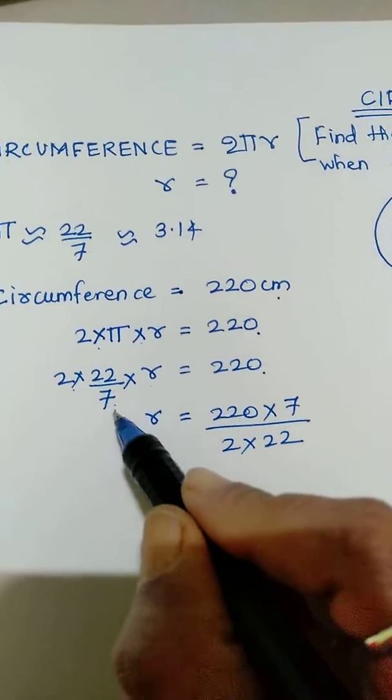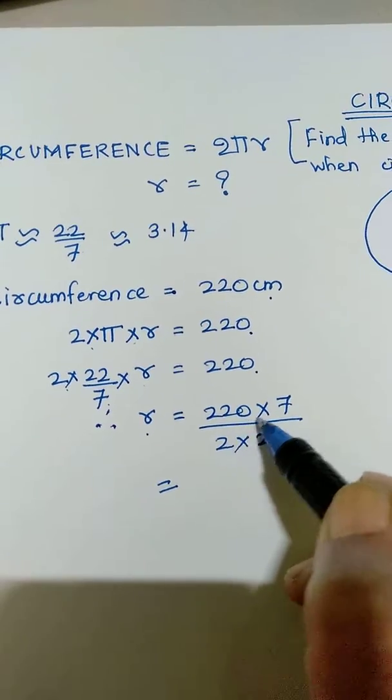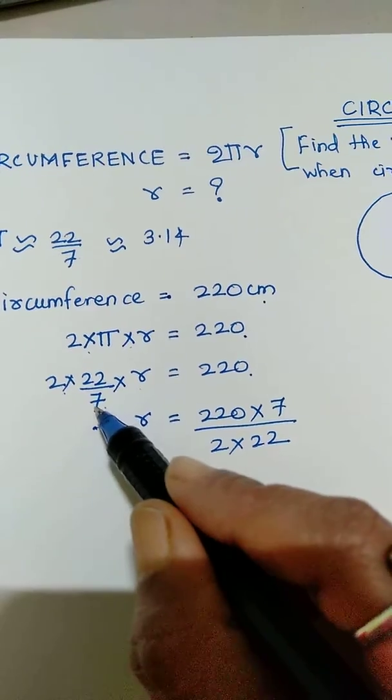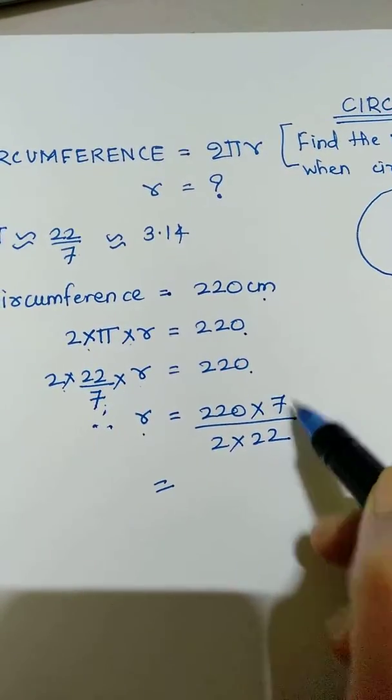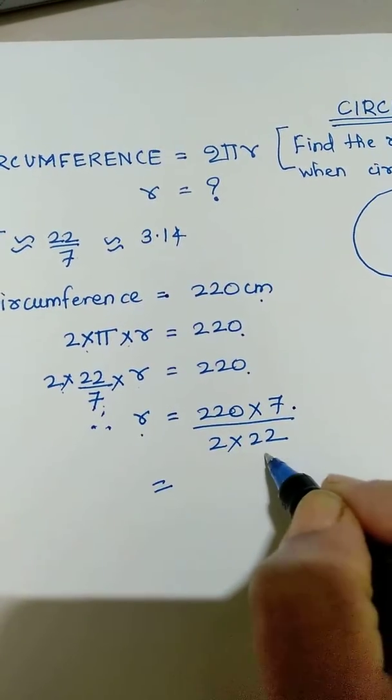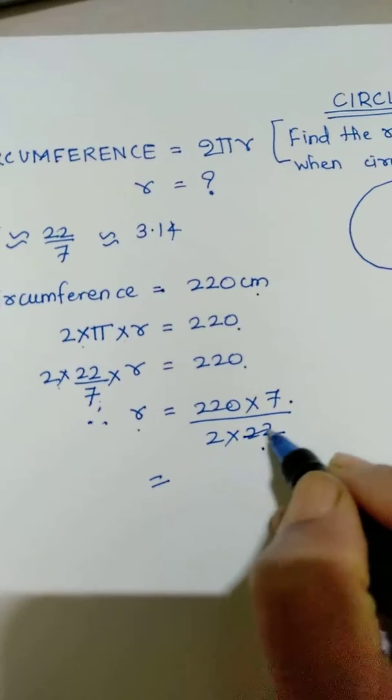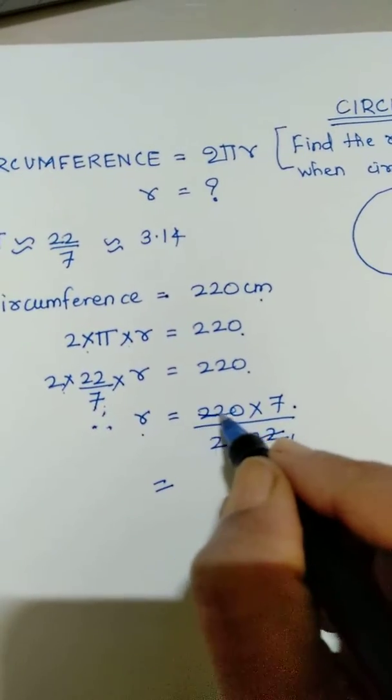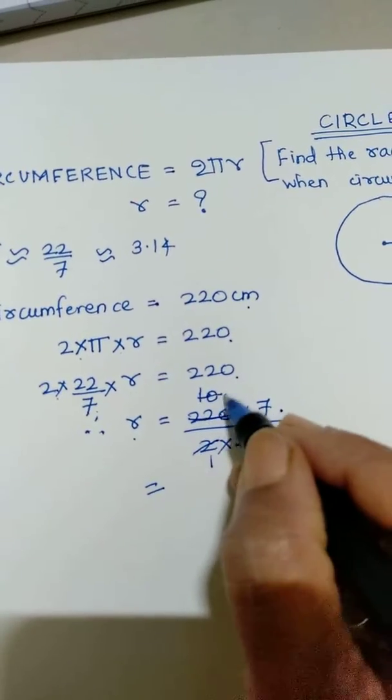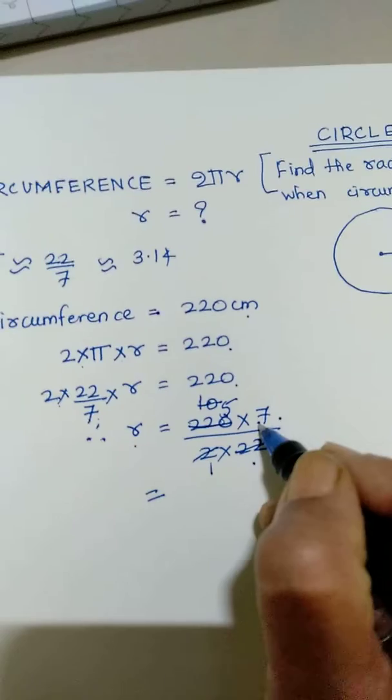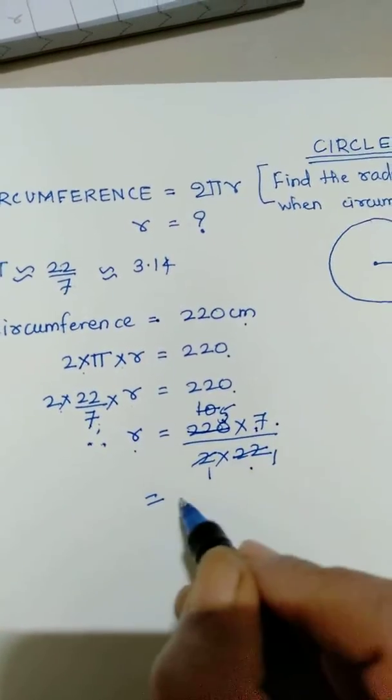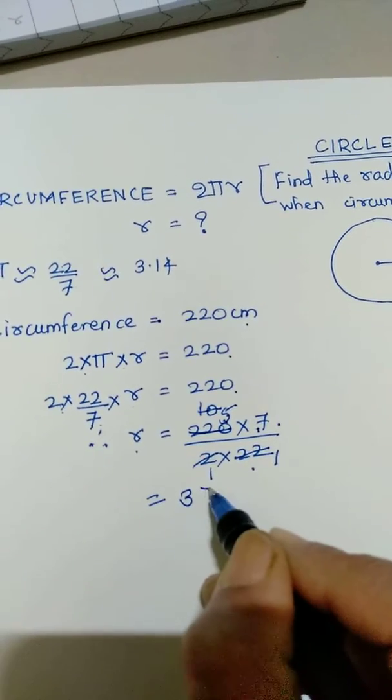So we keep r on the left hand side. r is equal to 220. With the rules of algebra we take 7 which is in the denominator here to the numerator, and 2 into 22 which is in the numerator here we take to the denominator. So let us work out: 220 divided by 22 is 10, then 10 divided by 2 is 5. So in the numerator we have 5 into 7, in the denominator we have 1.